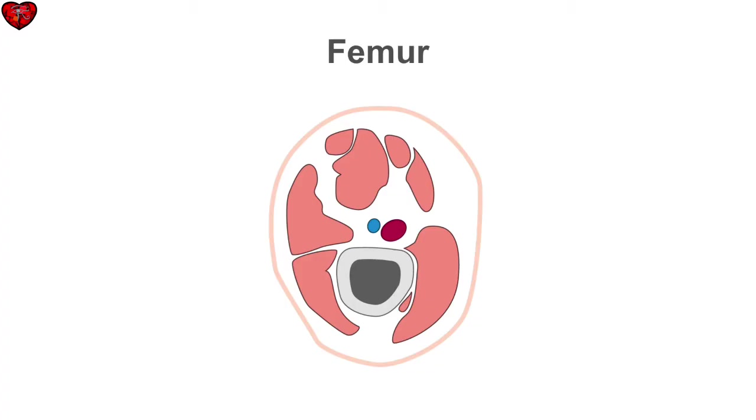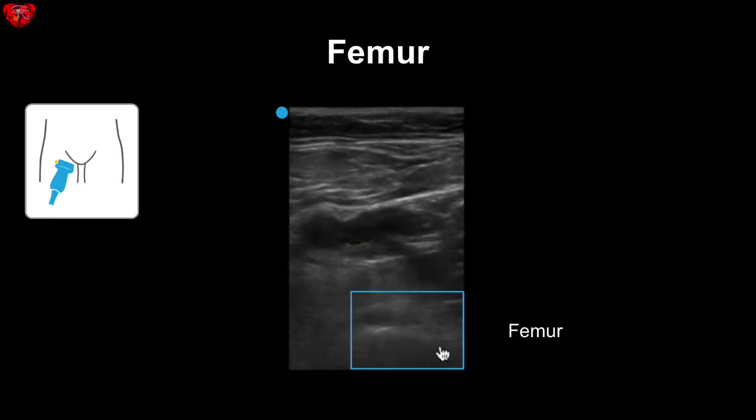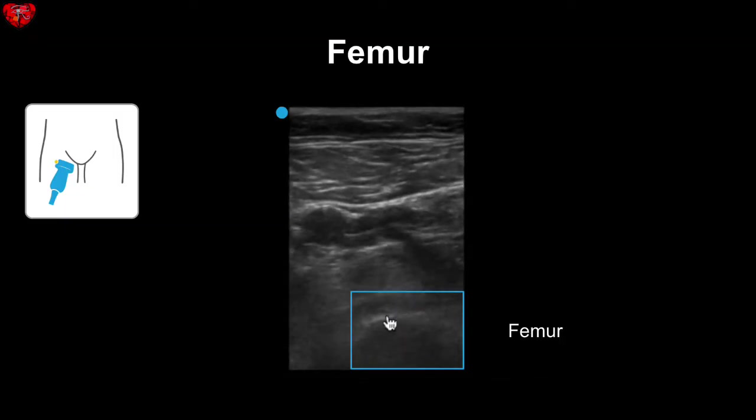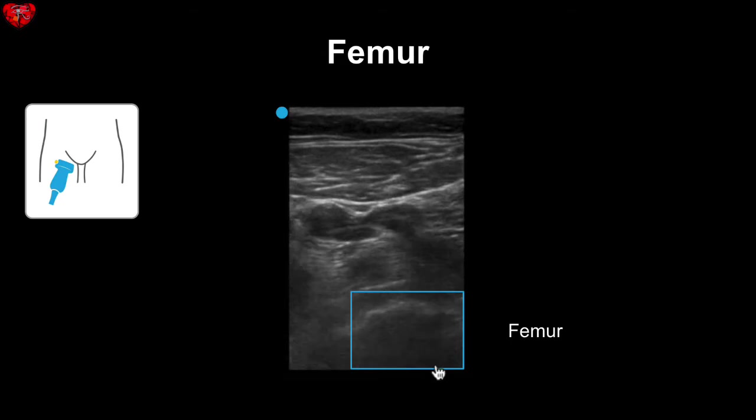The femur is a hyperechoic structure that appears rounded in cross section. Here you can see it deeper into the image.